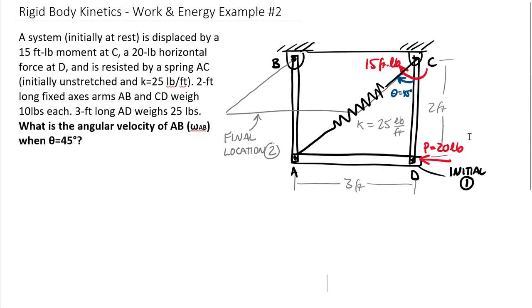Additionally acting on this system, we have a horizontal force P equals 20 pounds and a couple applied up here, a 15 foot pound couple, negative from the right hand rule.